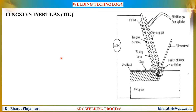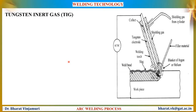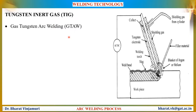Tungsten inert gas welding is an example of a gas shielded welding process, similar to metal inert gas welding process. In this process, it makes use of non-consumable uncoated tungsten electrodes. Since a non-consumable tungsten electrode is used, a separate filler material has to be added. This process is also known as gas tungsten arc welding process and is referred to as TIG or GTAW process.